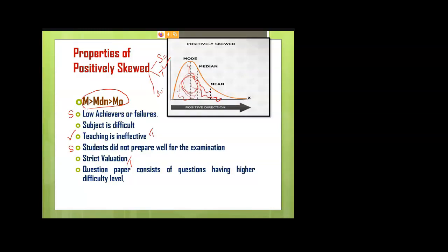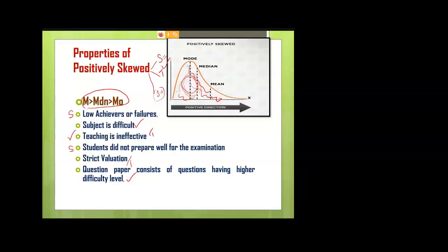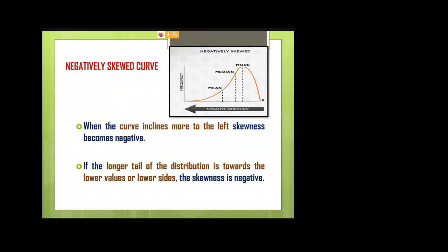Another teacher-side reason: if the teacher evaluates papers very strictly, giving only 5 out of 10, most students will get low marks, and the curve will show positive skewness. Other factors include subject difficulty — like mathematics or statistics being hard — and a very difficult question paper, which causes students to score low.